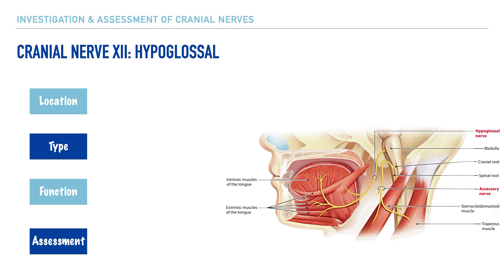The twelfth cranial nerve is the hypoglossal nerve, and one of the things that's helpful to make note of is the fact that its name gives us an idea of its location, too. The prefix hypo, of course, means under, and the term glossal means tongue. So together, we can now better understand that this nerve runs underneath the tongue.